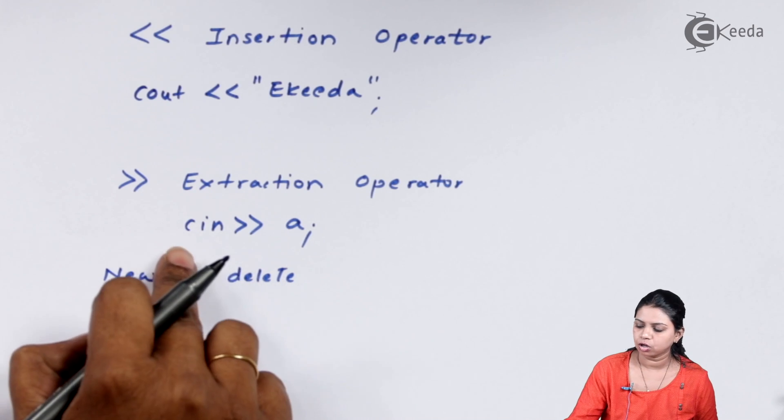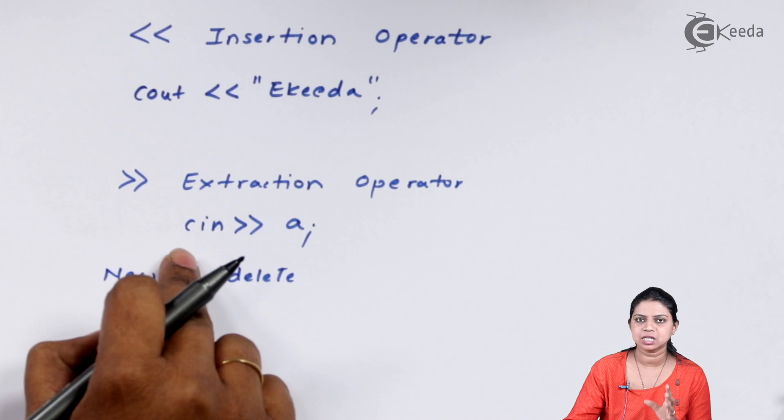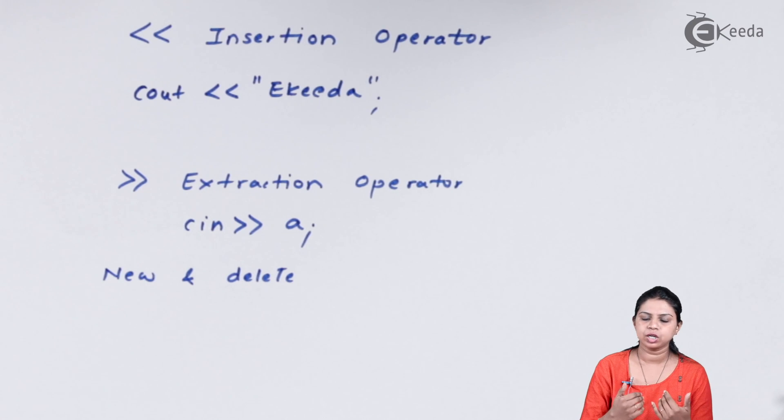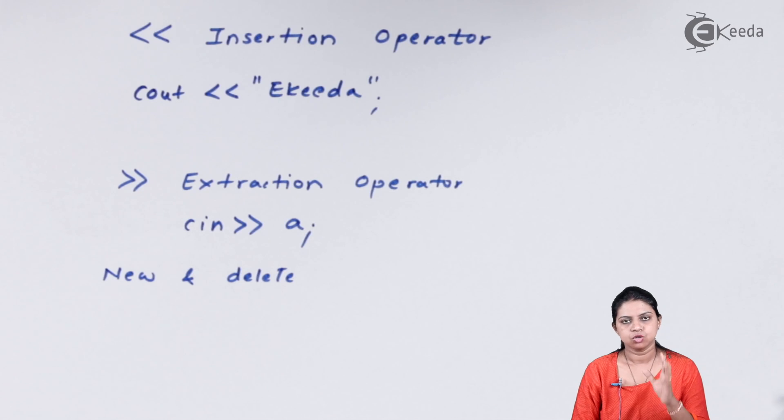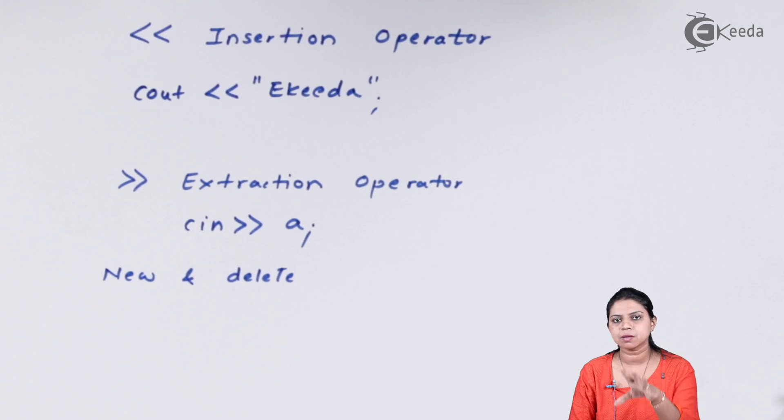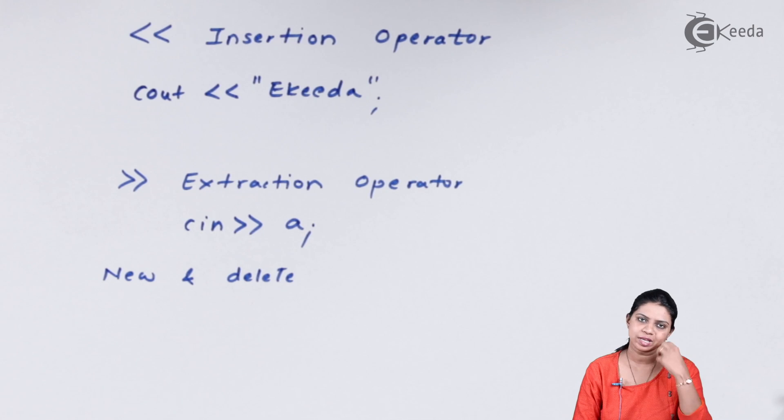That's why the extraction operator always comes with cin because in cin we take input and we extract the input. Extraction operator is used along with cin whereas insertion operator is used along with cout. Insertion operator is to insert something whereas extraction operator is to extract or remove something.